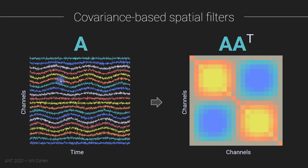But when you compare this group of channels to that group, you see they are negatively correlated — one group goes up-down-up-down while the other goes down-up-down-up. There are positive correlations, negative correlations, and a couple of channels that seem to be off doing their own thing. This is what the channel covariance matrix would look like: the color value at each pixel corresponds to the correlation between two channels. You can see groups of correlated channels, groups of anti-correlated channels, and one channel that isn't correlated with any of the others.